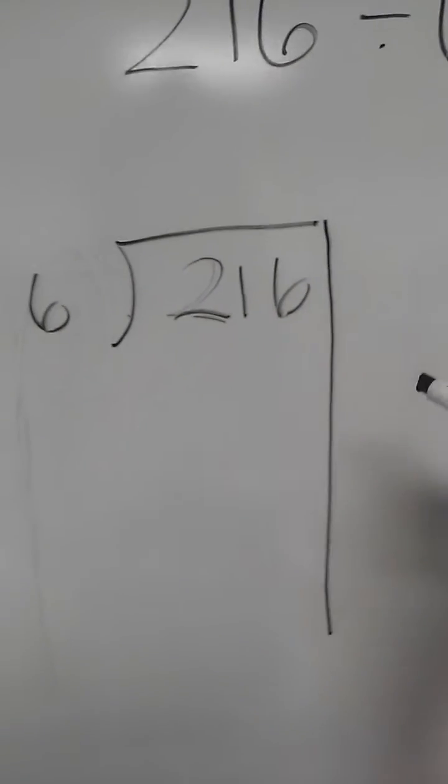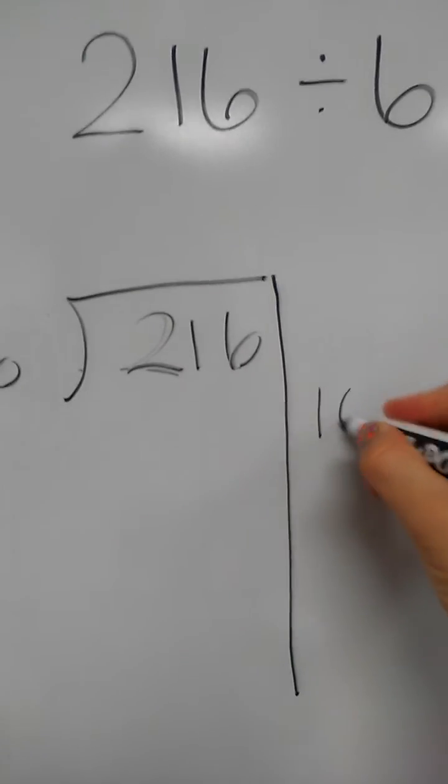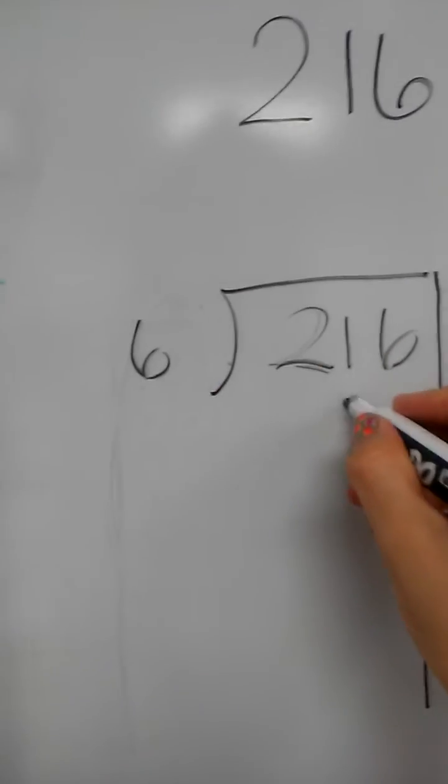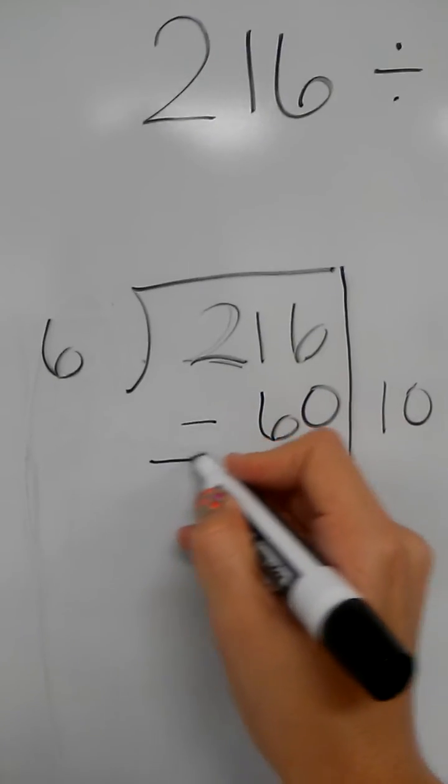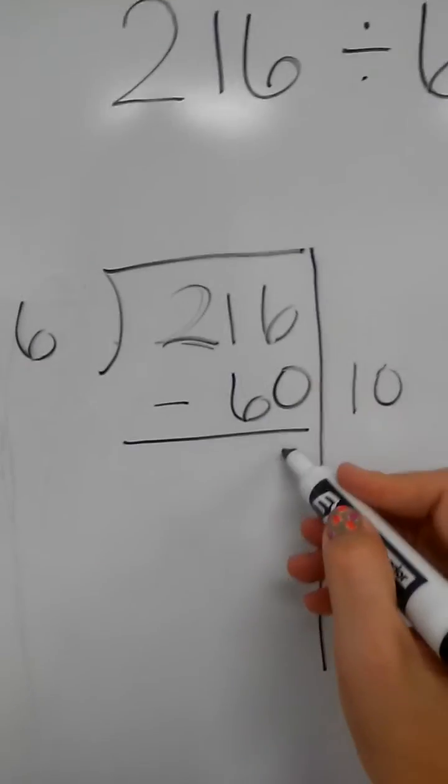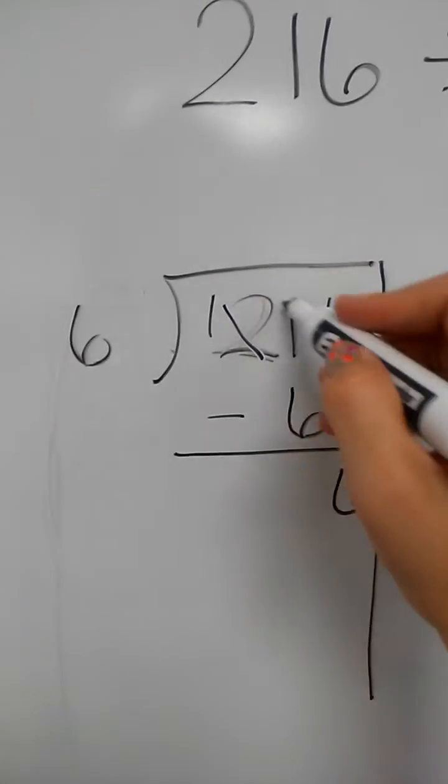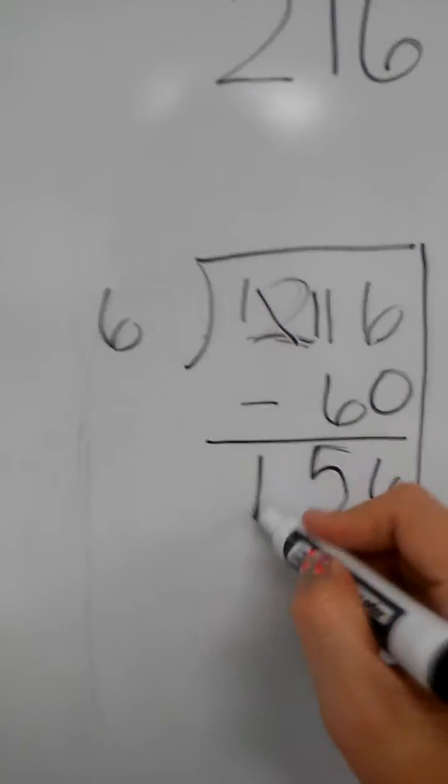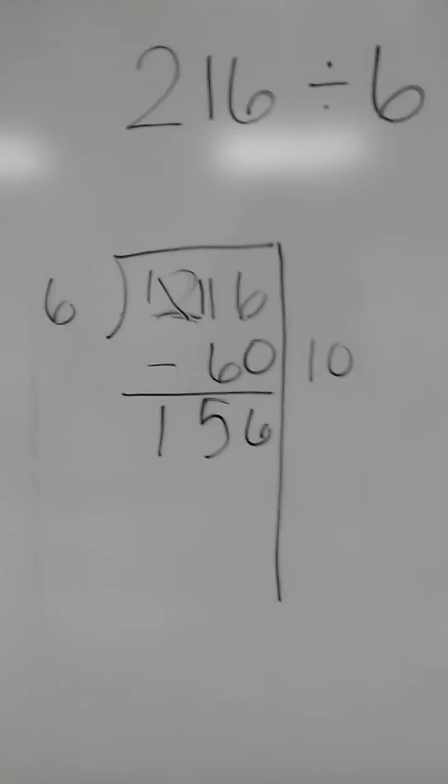So a lot of times I start with 10. 6 times 10 is 60, and then I subtract 60 from my 216. 6 minus 0, 11 minus 6 is 5, so 156.